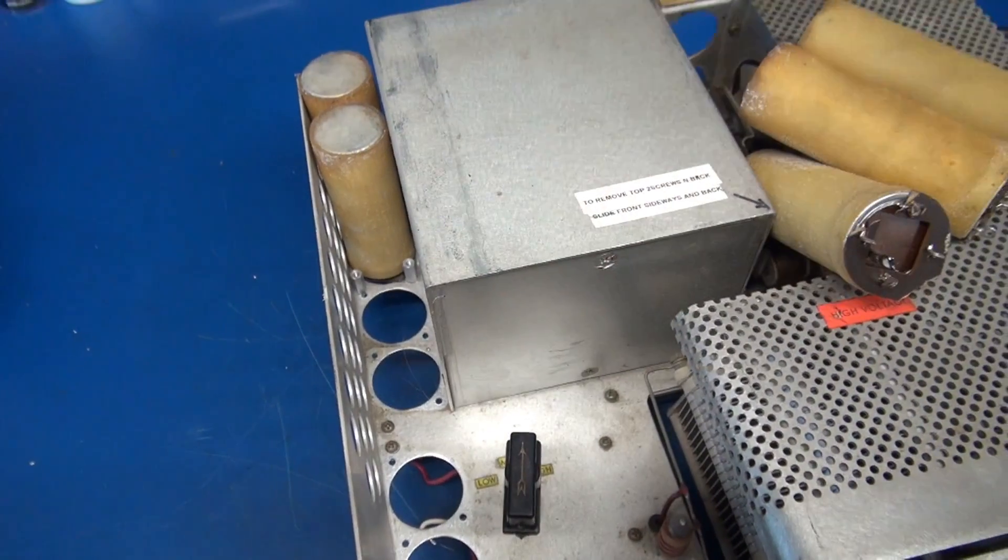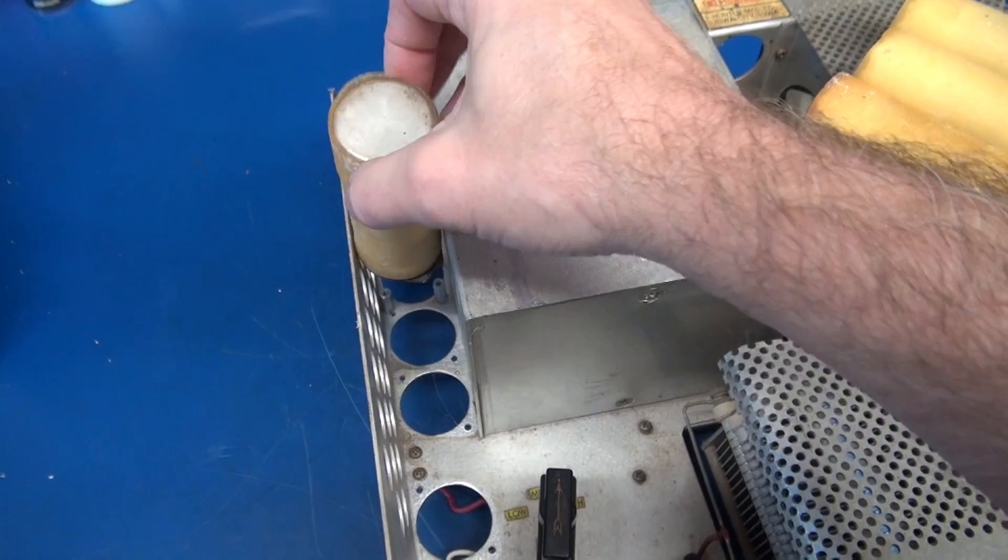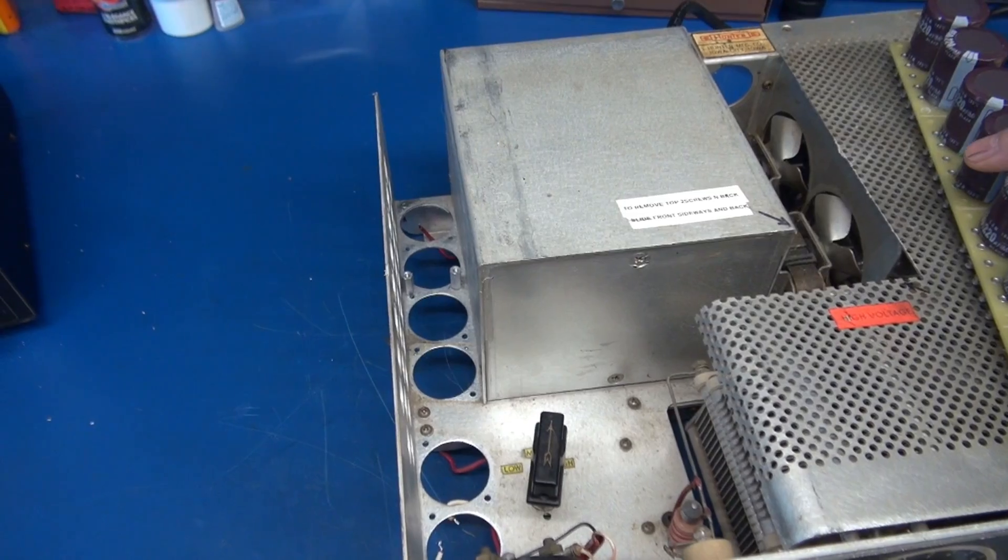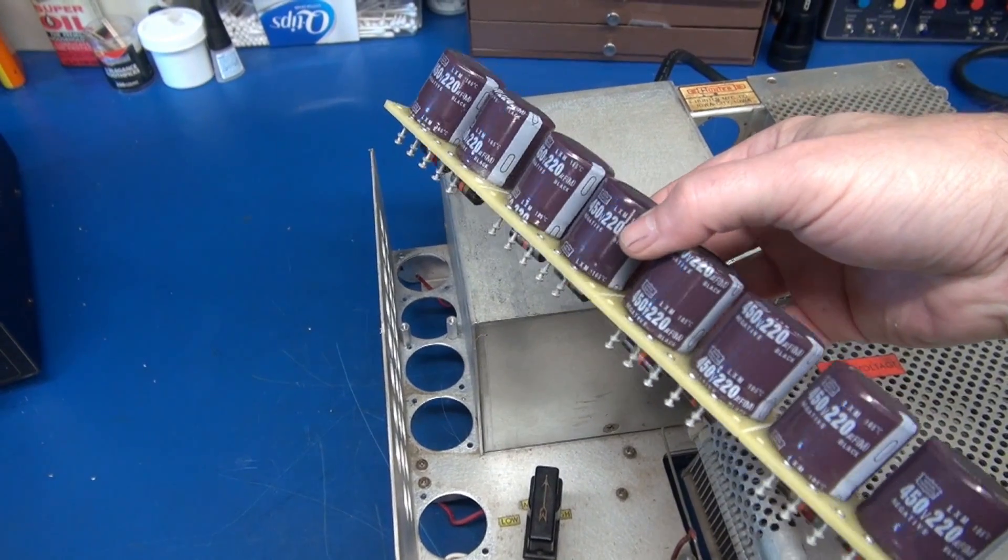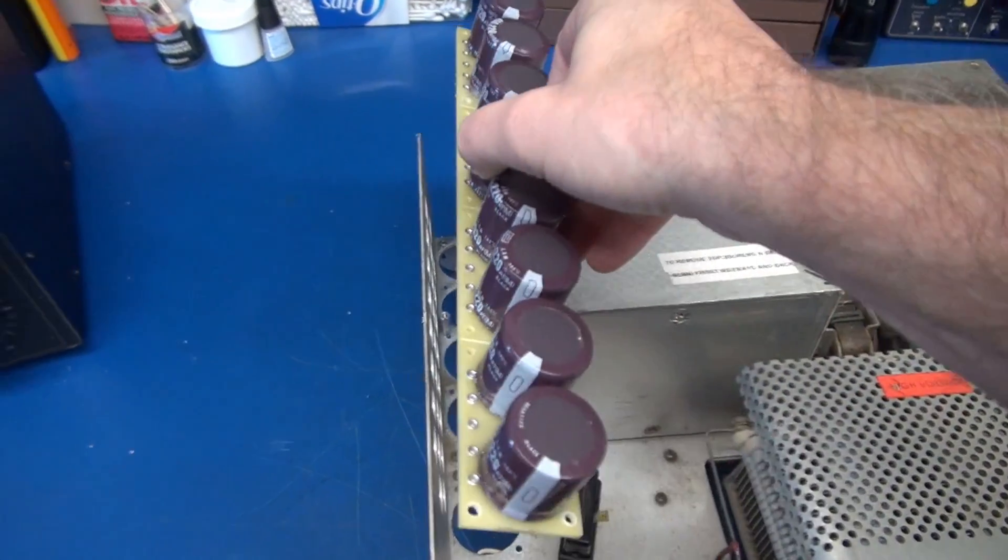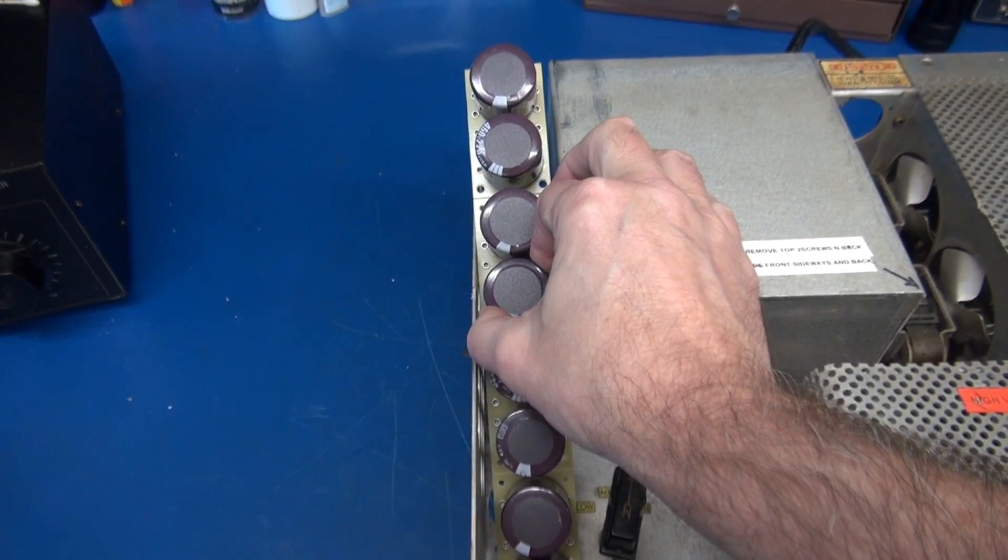I found that these are not readily available so I came up with a solution and that solution is a custom made filter bank on turret boards that will drop right down in that cavity and mount on standoffs.